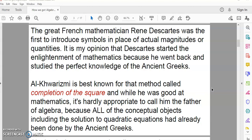Al-Khwarizmi is best known for completion of the square. That's really his claim to fame. And while Al-Khwarizmi was probably good at mathematics and arithmetic, it's hardly appropriate to call him the father of algebra because all the conceptual objects, including the solution to quadratic equations, had already been done by the ancient Greeks. In fact, the ancient Greeks could even solve quartic equations geometrically.